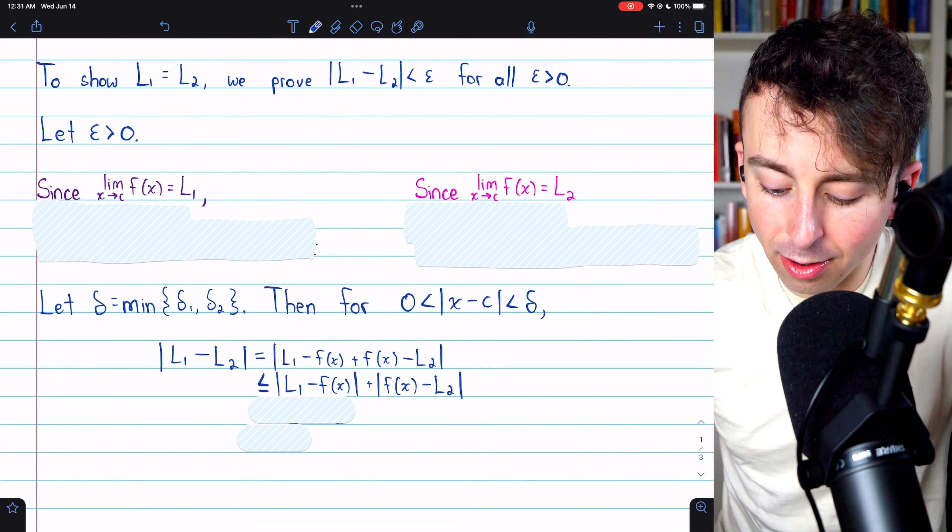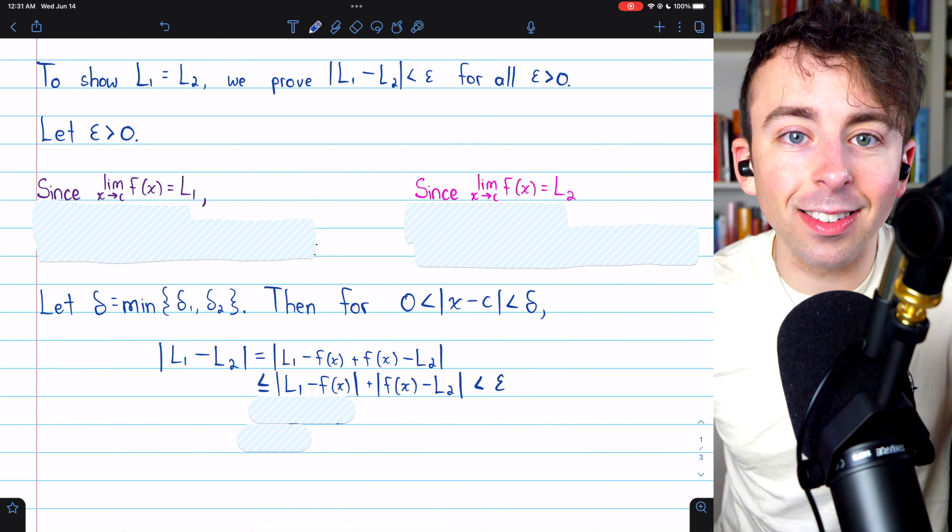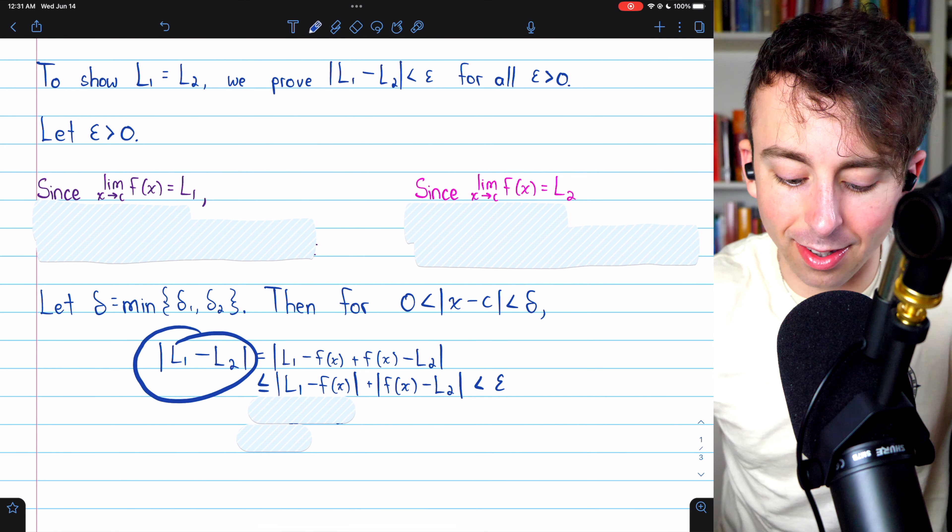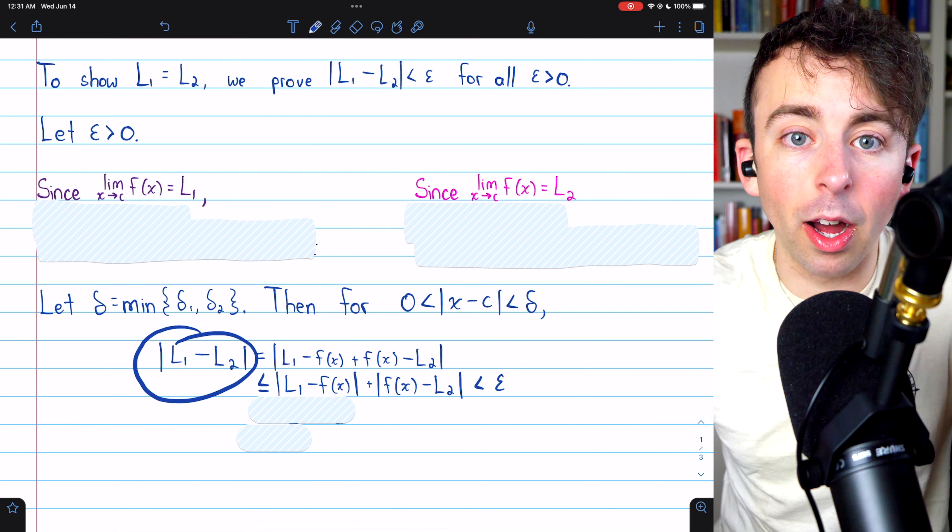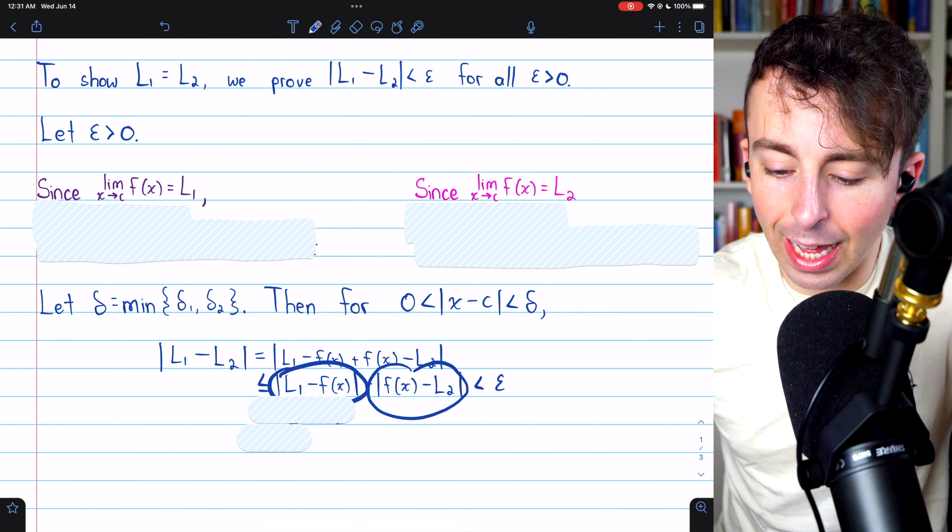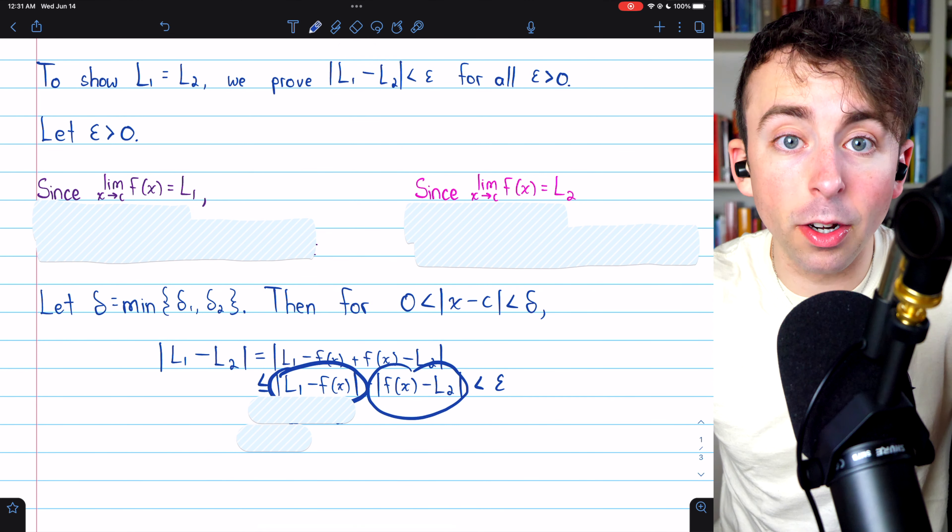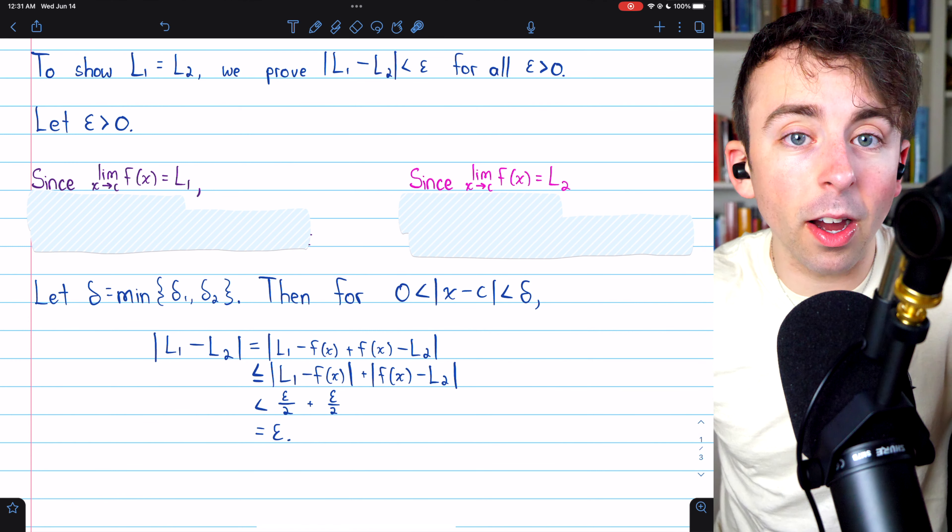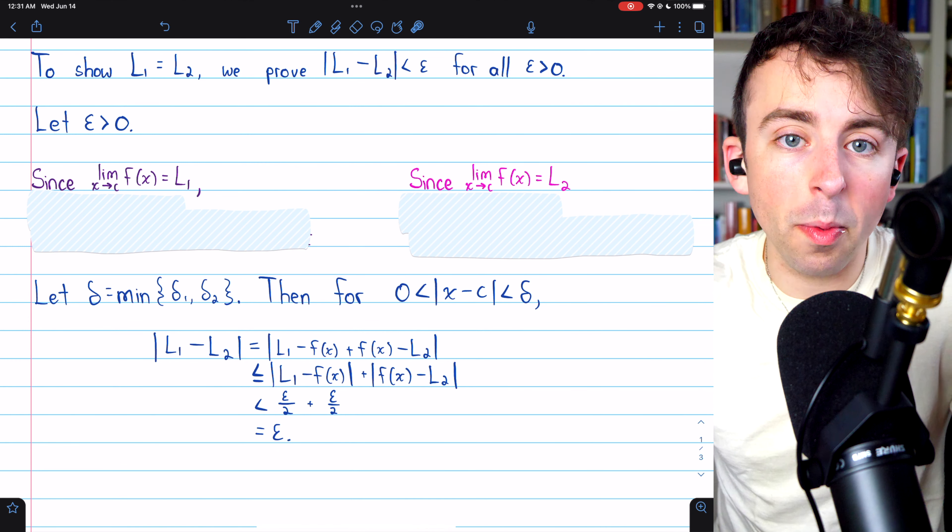Well, of course, we want this to be less than epsilon. That's the goal here. We're showing the distance between the limits is less than any positive number. So, we just need both of these things to be less than epsilon over 2. If this is less than epsilon over 2, and this is less than epsilon over 2, then there we go. We're done the proof. So, how do we make that happen?